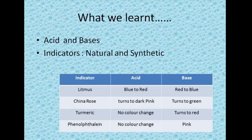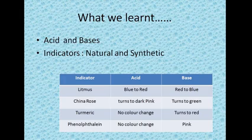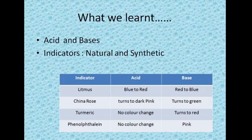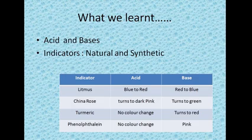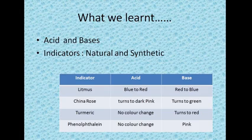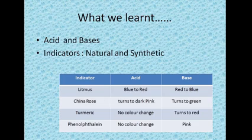The chapter is now finished, so let's review what we have learned. First, we discussed the characteristics of acids and bases, then about indicators — natural and synthetic. Natural indicators include litmus, china rose, and turmeric. In acid solution, blue litmus changes to red; in basic solution, red litmus changes to blue. In china rose indicator, acid medium turns it dark pink or magenta, while base turns it gray. In turmeric indicator, there is no color change in acid medium, but in basic medium it turns red.